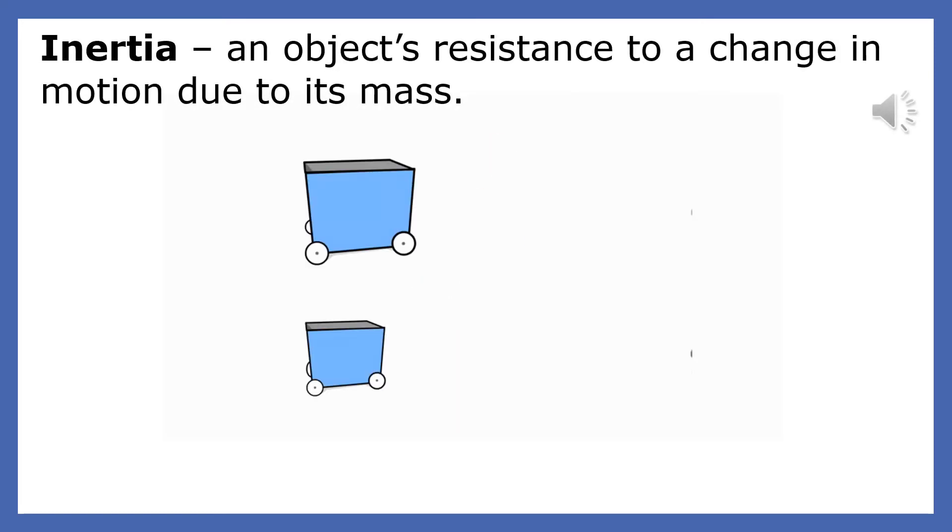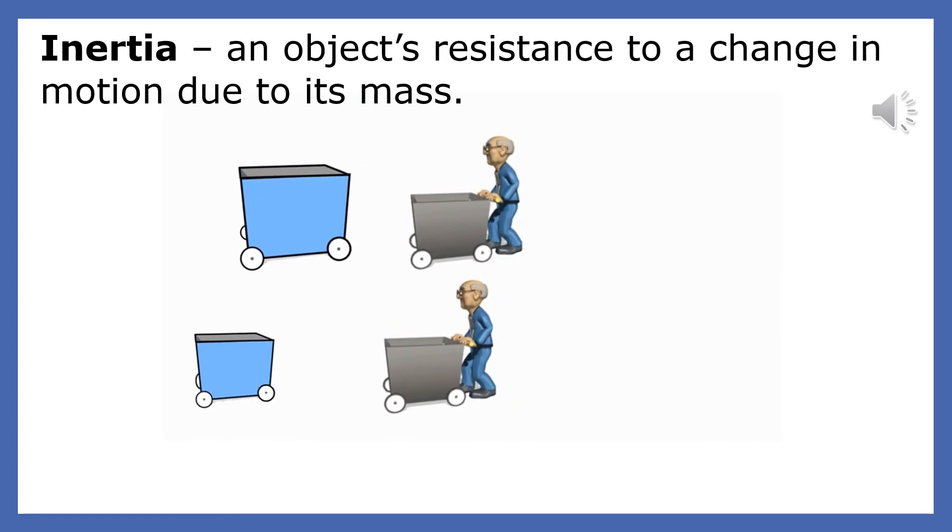Once again, inertia is an object's resistance to a change in motion due to its mass. The person in this animation applies the same force to the two carts. It's no surprise that the cart with the smaller mass receives the greater acceleration. The smaller cart has less mass and therefore less inertia. A smaller inertia means that it has a smaller resistance to a change in motion due to its mass.